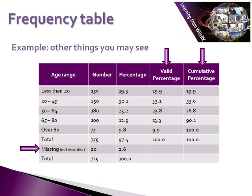You'll also see a column called 'valid percentage.' Generally, analysis is run on the valid number of cases — those for whom a response is recorded, taking away any missing cases. The percentage column to the left shows the percentage of everybody, including categories such as less than 20, 20 to 49, 50 to 64, 65 to 80, over 80, total, missing, and overall total. In this case, 97.4% of the total responded and 2.6% were missing. Removing the 20 missing cases leaves 755 valid cases, to which percentages are ascribed.